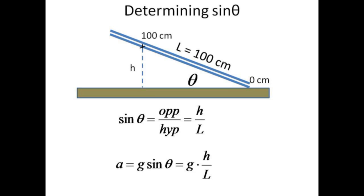H is the opposite side and the 100 cm length, L, is the hypotenuse. The ratio of H over L multiplied by g is approximately the acceleration of the cart. The presence of friction in the actual experiment ensures that the measured acceleration will be less than this ideal value.